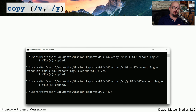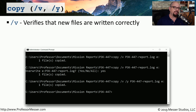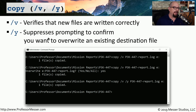The 'copy' command copies a file or series of files from one directory to another — either on the same storage device or a different one. Two important options: '/V' verifies that files were copied correctly, which is useful when copying to external storage; '/Y' suppresses the overwrite prompt when a file already exists at the destination. In the upcoming demo, I'll copy a file and then try to copy it again — the copy command will prompt whether to overwrite, which can be bypassed using '/Y'.